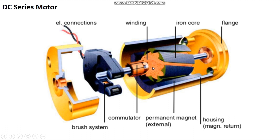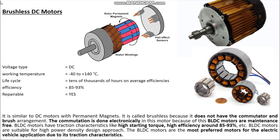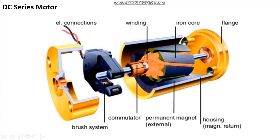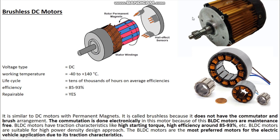To remove all the disadvantages of the DC series motor, we have the brushless DC motor. In this video I won't explain exactly how all motors work — you can find detailed videos with animations on YouTube. I'll give you a brief idea of why to choose each motor based on criteria like efficiency, working temperature, voltage type, repairability, and advantages. The major advantage of BLDC motors is no brushes or commutator, so there's no internal heat or friction losses. You get high starting torque and high efficiency of around 85 to 93 percent.